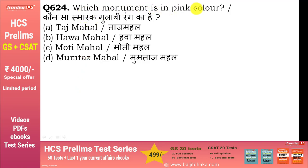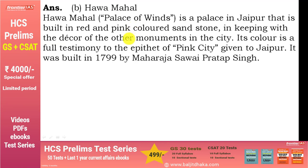Which monument is in pink color? Answer है Hawa Mahal, Jaipur। Taj Mahal और Moti Mahal नहीं हैं। Hawa Mahal Jaipur के अंदर है, जो Rajasthan की capital है। इसे 'palace of winds' भी कहते हैं। यह red and pink colored sandstone से बना है। Jaipur को 'pink city' के नाम से भी जाना जाता है। इसे Maharaja Sawai Pratap Singh ने बनवाया था।